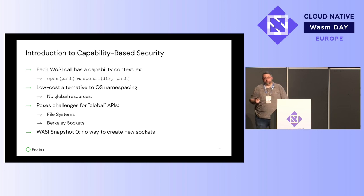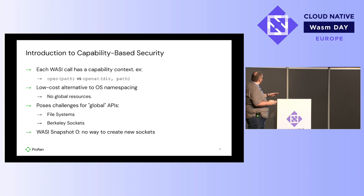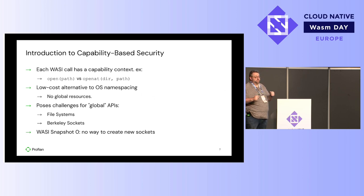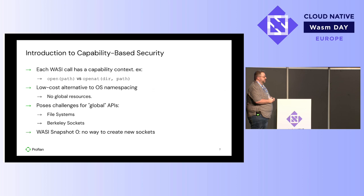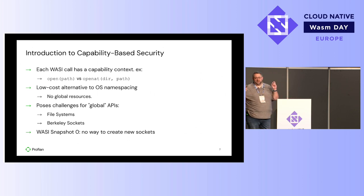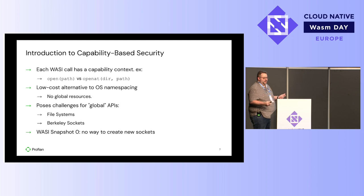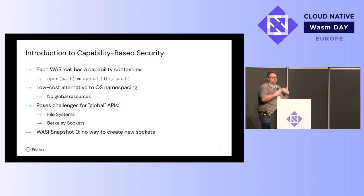Capabilities provide a low-cost alternative to OS namespacing. All containers are built on top of operating system namespacing, where you can create different namespaces for network interfaces and file systems. Capability-based security says we're not going to have any APIs that don't have a context to them, so we can always create private views of resources because every API receives a context. We want a system where there are no global resources, and the runtime can always indicate which resources a particular WebAssembly executable has.